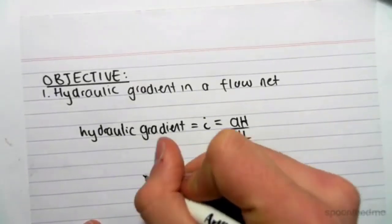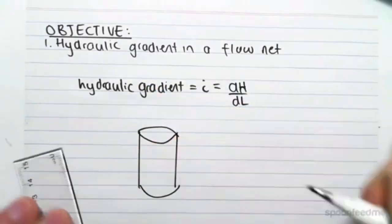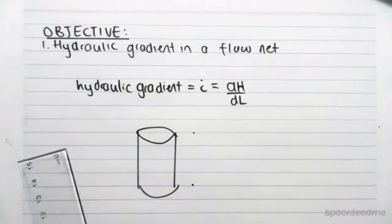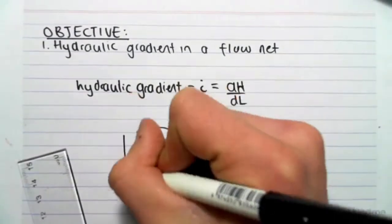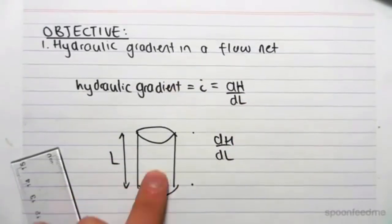Say for example, we had a cylinder, and we had a total head change. We could work out the head at that point, at that point, and we could find dh, the change in head. Then we would just measure or see the length, and that would be the change in length, and it would be very easy to find.